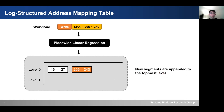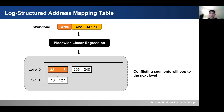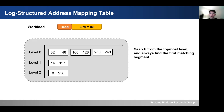To handle write requests, the piecewise linear regression translates the mapping table entries into learned index segments, and the newer segments are appended to the topmost level. If the new segments conflict with an existing segment — meaning they have overlapping LPA ranges — the older segments will be popped to the next level. As the mapping table grows, there could be multiple levels, and to perform a flash address translation, the search starts from the topmost level until we find the correct index segment that indexes the logical address.